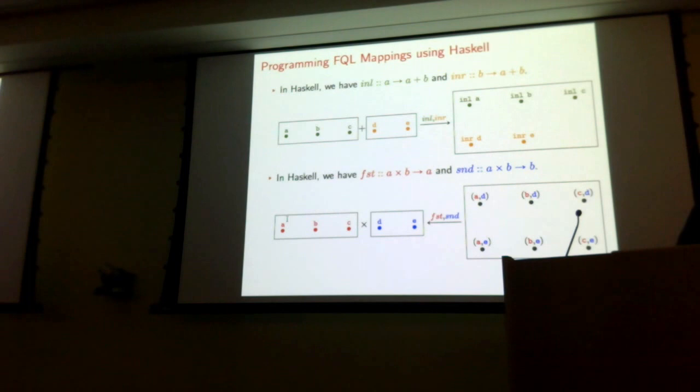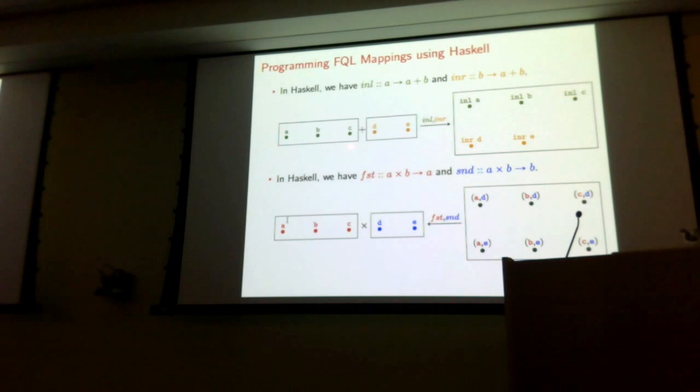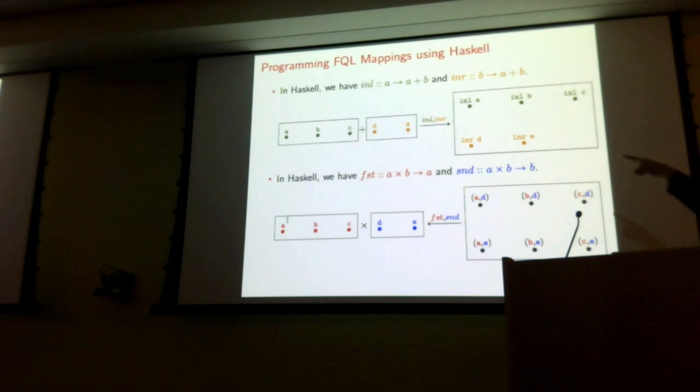Before I mentioned how to sum schemas and how to product them, but I'm also obligated to give you the operations inl and inr for forming sums, and projections for products. For inl, you take a database schema with three nodes and need a function that maps into the sum schema: you map A to inl-A, B to inl-B, and C to inl-C. For inr, the orange arrows map D to inr-D and E to inr-E.